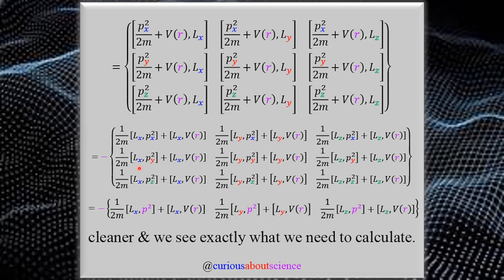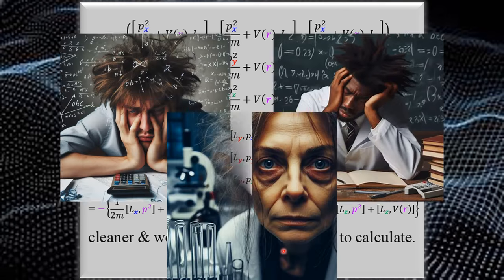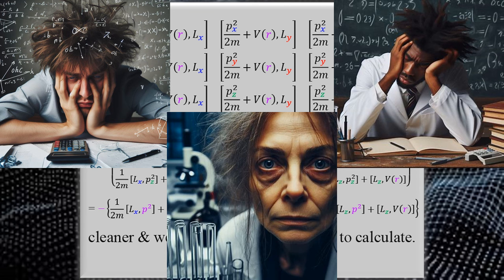We already proved [LZ, P²] = 0, so we need [LX, P²] and [LY, P²]. For LX with P squared, we run it through with linearity. LX with PX goes to zero for every component. For the PY and PZ terms, we use the distributivity rule to expand. Here's where the Levi-Civita symbol comes in: for LX,PX we have index pair (1,1), a repeated index giving zero. For LX,PY we have (1,2), requiring K=3, giving Levi-Civita(1,2,3) = plus one, an even permutation.